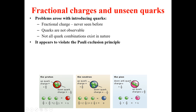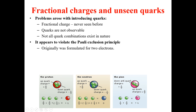Another problem is that not all quark combinations exist in nature, and the quark model appears to violate the Pauli exclusion principle. As you can see in this diagram, the proton is made from two up quarks and one down quark, and the neutron is made from one up quark and two down quarks. These combinations seem to violate the Pauli exclusion principle.